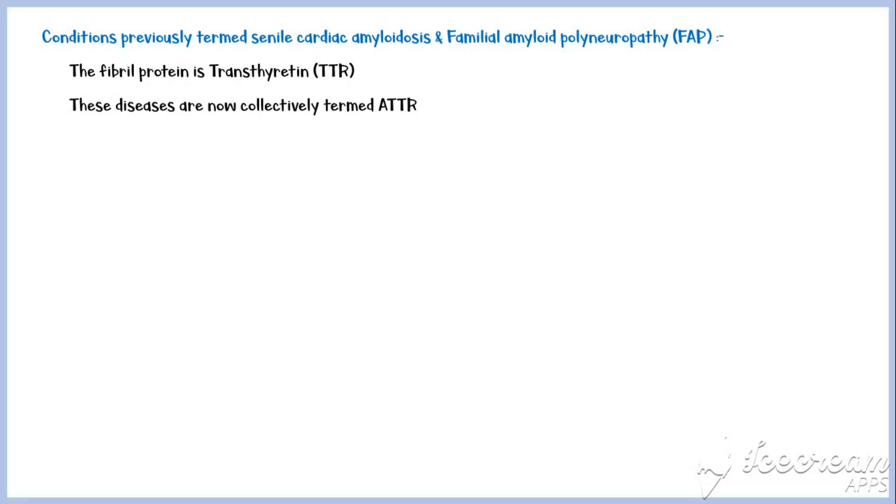Many different types of amyloids have now been identified. For the purpose of learning, they can be categorized into following types. But, it is important to note that there is much overlapping between these types. They include, systemic amyloidosis, hereditary amyloidosis, CNS amyloidosis, ocular and other localized amyloidoses.